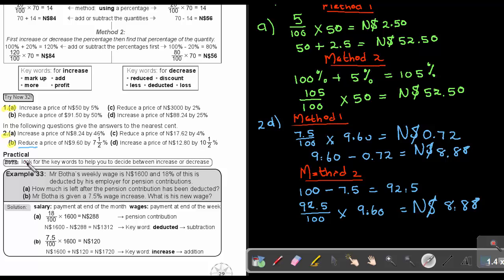Let's look at the practical sum. Note, look for the keywords to help you to decide between increase and decrease. Now let's just go through this. Mr. Bouta's weekly wage is 1,600, and 18% of this is deducted by his employer for pension contributions. How much is left after the pension contribution has been deducted? So first, we must work out what is 18%. So now Method 2 will not be so good. I'd rather just work with Method 1. So I work out 18% and I get 288, and then I take the 1,600 and I subtract the 288, and that gives me an answer of 1312. So remember the word deducted means subtraction.